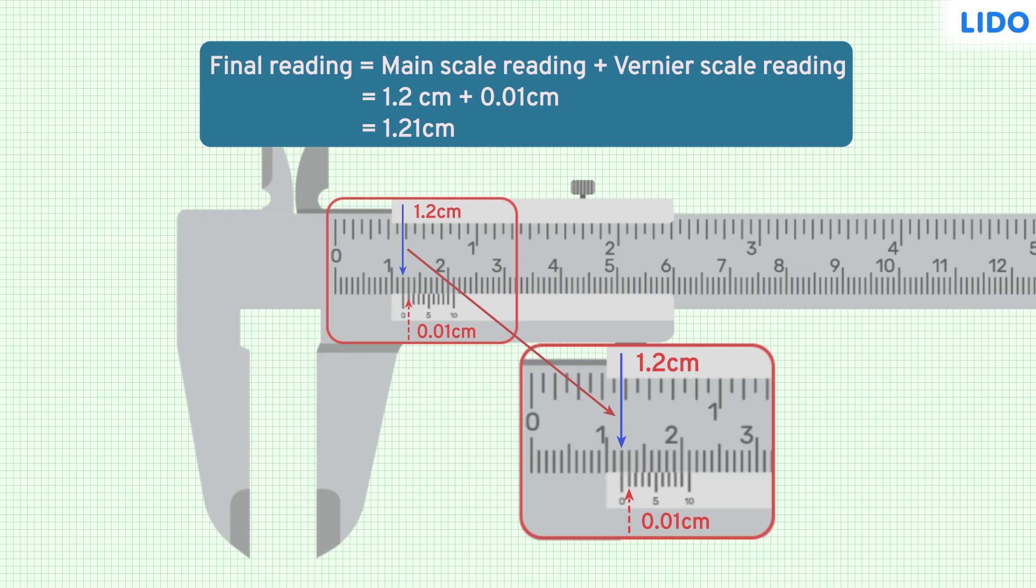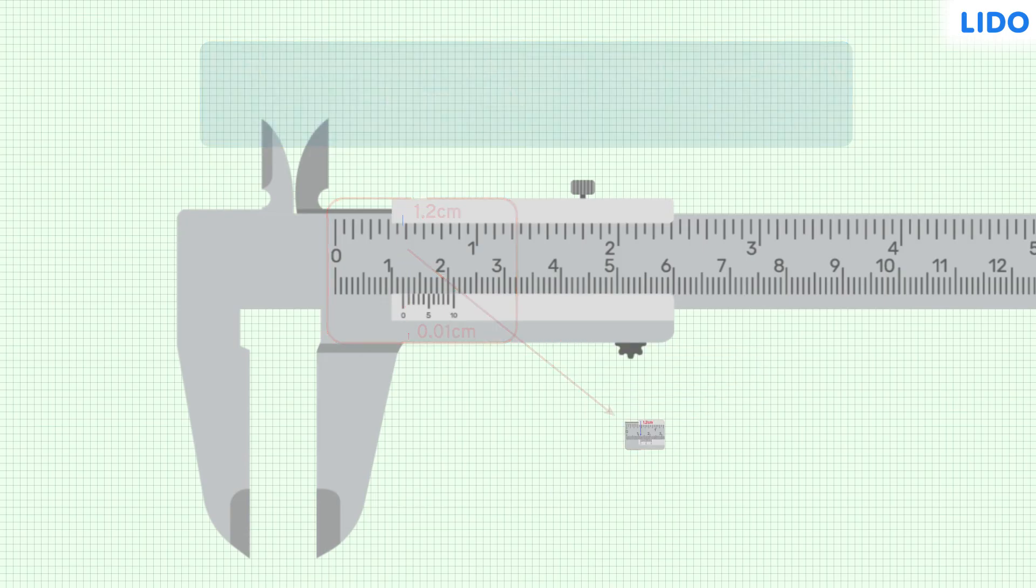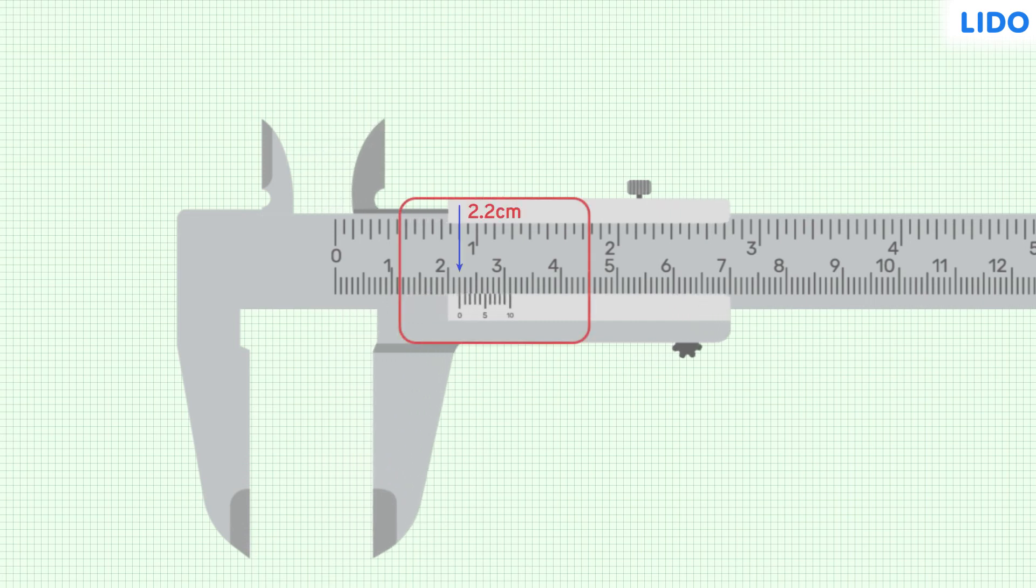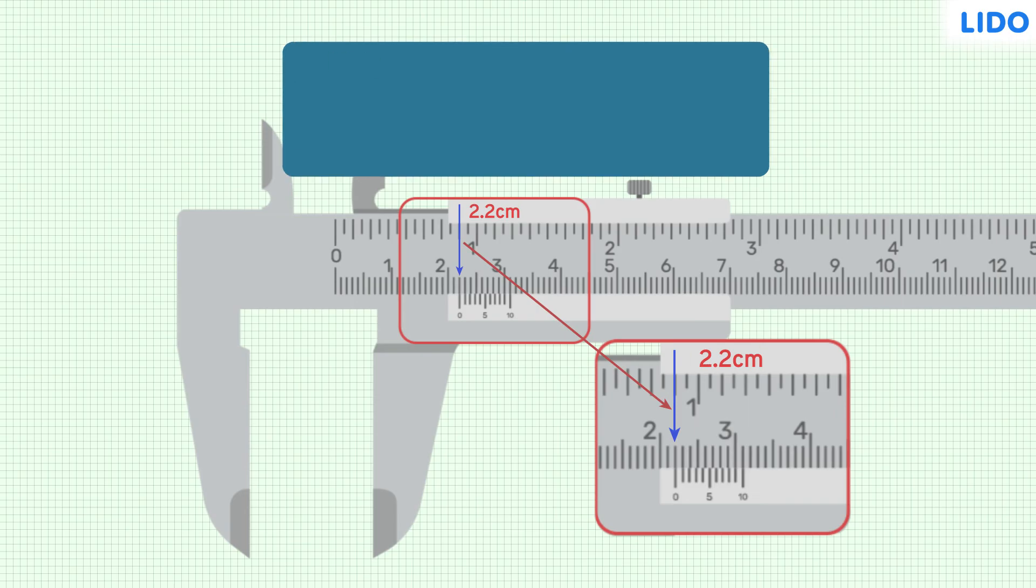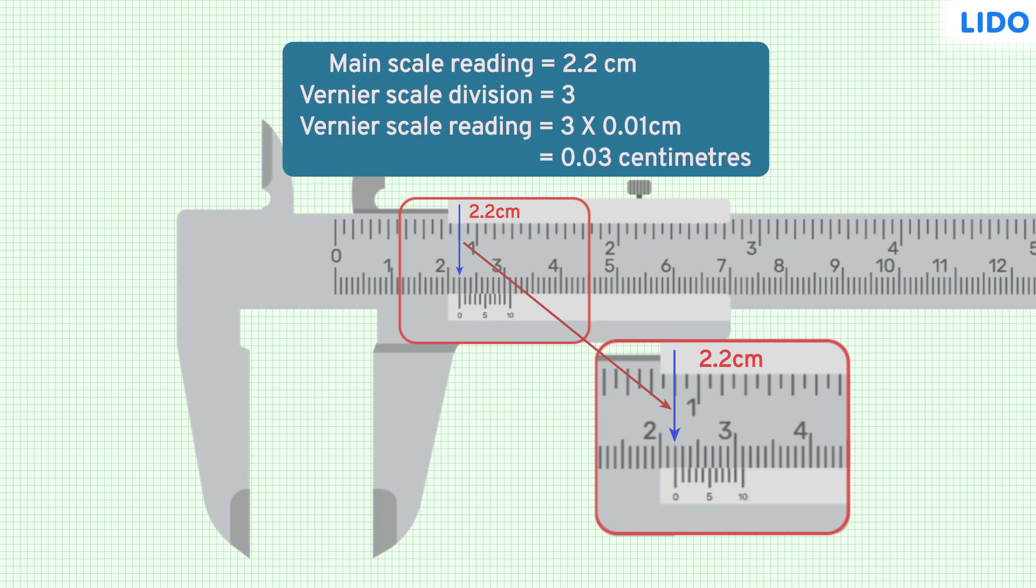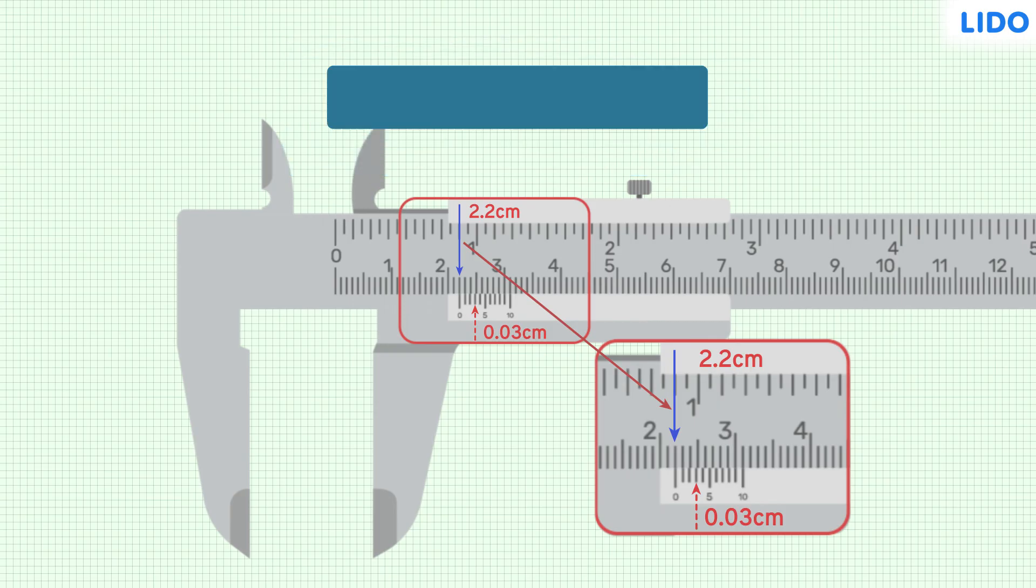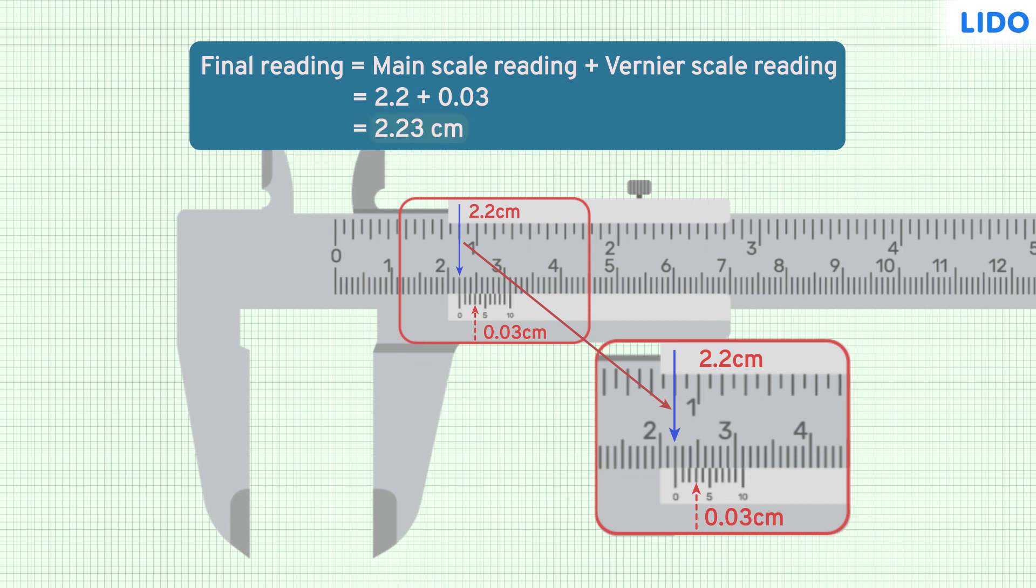Can you tell the final reading from the given scales? The zero of the Vernier scale is slightly ahead of the 2.2 cm mark on the main scale. This tells us that the reading on the main scale is 2.2 cm. The third division on the Vernier scale exactly coincides with the main scale, meaning the Vernier scale reading is 0.03 cm. Thus, giving us a final reading value of 2.23 cm.